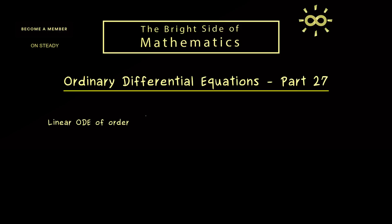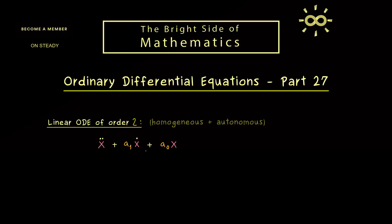We can immediately start with our topic of today, which is about the general linear ODE of order 2. We keep it simple by looking at the autonomous case and also just at the homogeneous part. The general form of such an ODE is: the second derivative of x, plus a1 times the first derivative of x, plus a0 times the function itself, equal to zero. The only inputs are the two real coefficients a0 and a1.